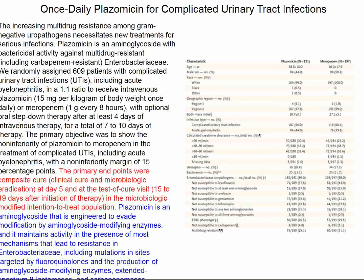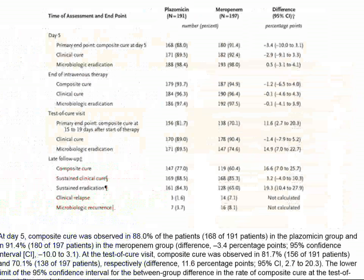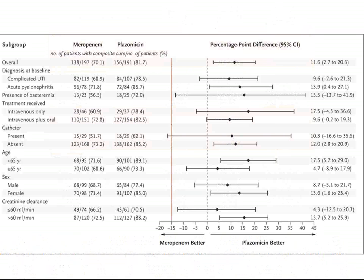In this study, plazomicin was compared to meropenem for patients with severe complicated urinary tract infections — complicated in terms of the bacteria involved, anomalies in the lower urinary tract, or the presence of urosepsis. About 200 patients in each group were randomized. The goal was to prove plazomicin is no worse than meropenem. There was hardly any difference between the two treatments, and it looks as if plazomicin could be a little better than meropenem in terms of curing these severe infections.